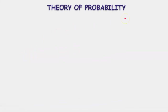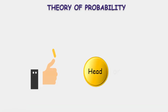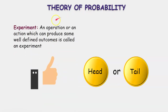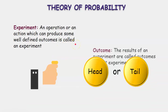The theory of probability is the calculation of probabilities of different events. Now let us see some technical terms used in this. If we toss a coin, you will get outcomes as either head or tail. This tossing of a coin is called an experiment, which can be defined as an operation or action which can produce some well-defined outcomes. The results you get from this experiment are called outcomes.